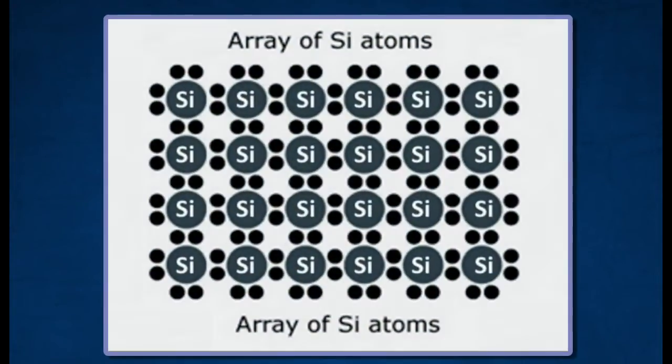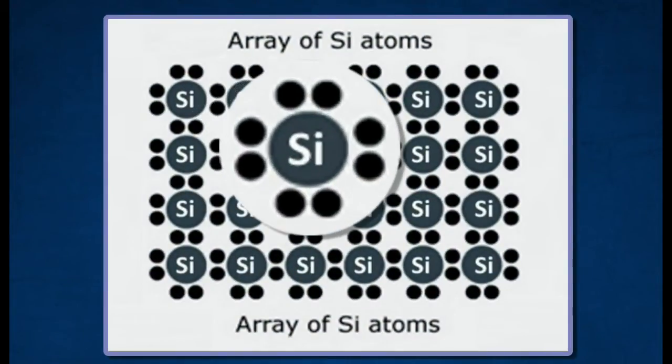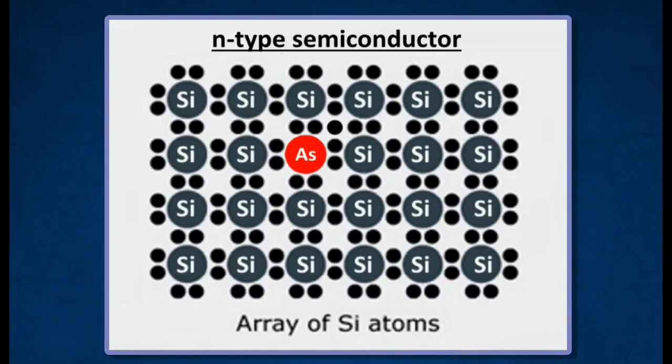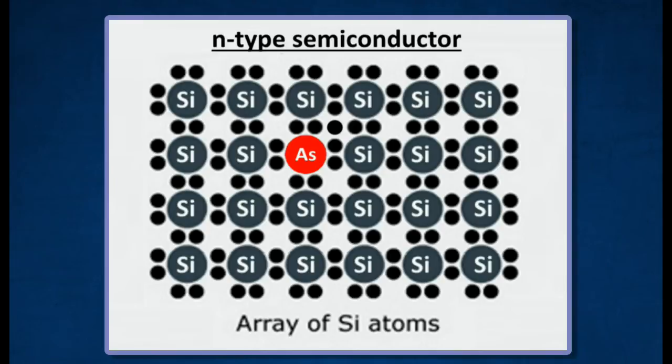Each silicon or germanium atom of a pure semiconductor has four electrons in the valence band to form valence bonds with four neighboring atoms. If atoms with five valence electrons or pentavalent atoms such as arsenic, antimony, or phosphorous are doped into silicon, there is an excess electron after four valence bonds are formed.